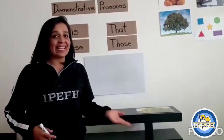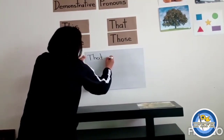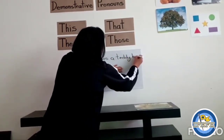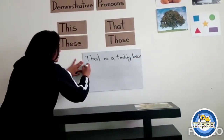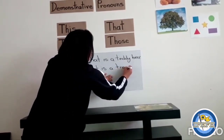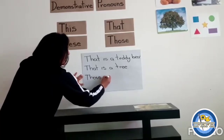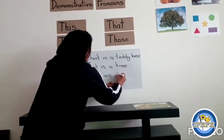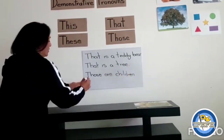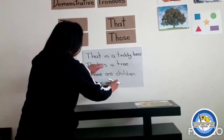Now I'm going to write another example. That is a teddy bear. Next: that is a tree. Next example: those are children. The last example: those are shapes.